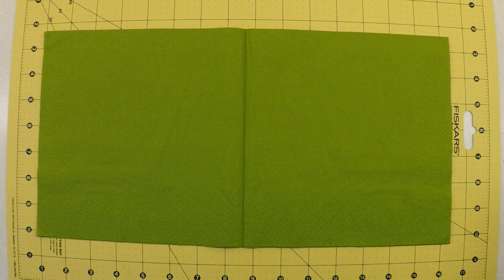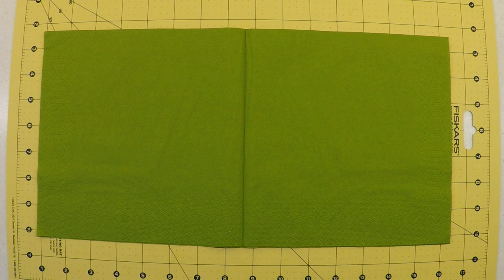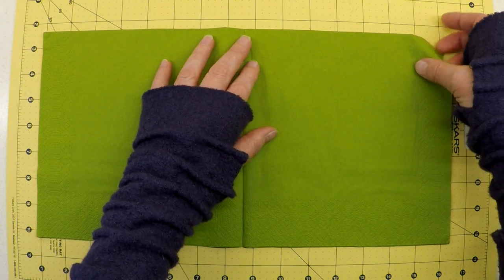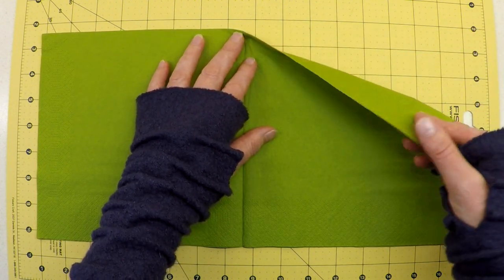That's the last of the precise folds. We are putting no more specific creases into this napkin from this point forward. It's simply a rolling technique. We're going to make a cone and I will just show you what you need to be looking out for.